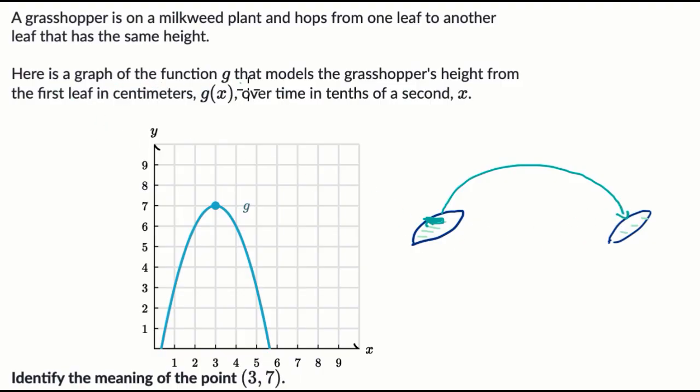Here's a graph of the function g that models the grasshopper's height from the first leaf in centimeters, g(x), over time. So the height is in centimeters over time in tenths of a second.